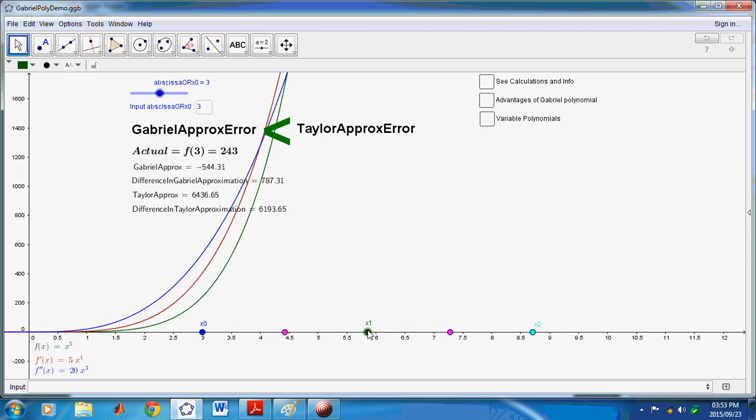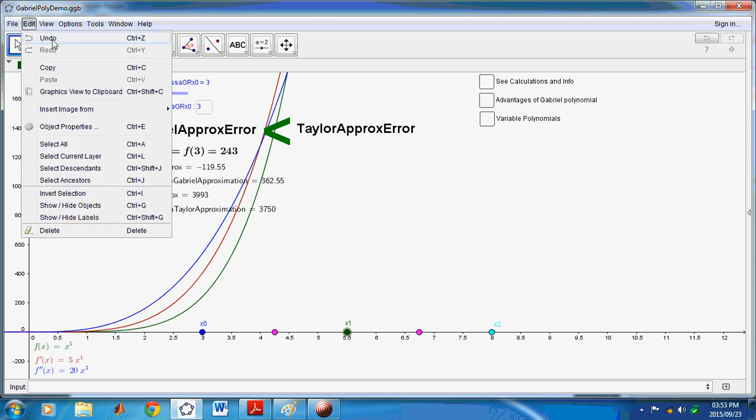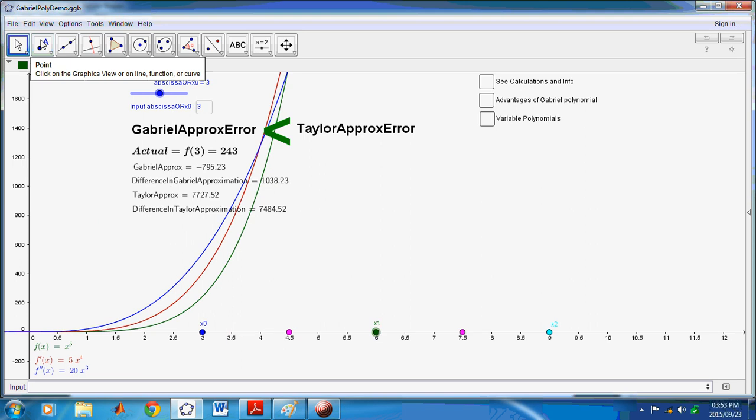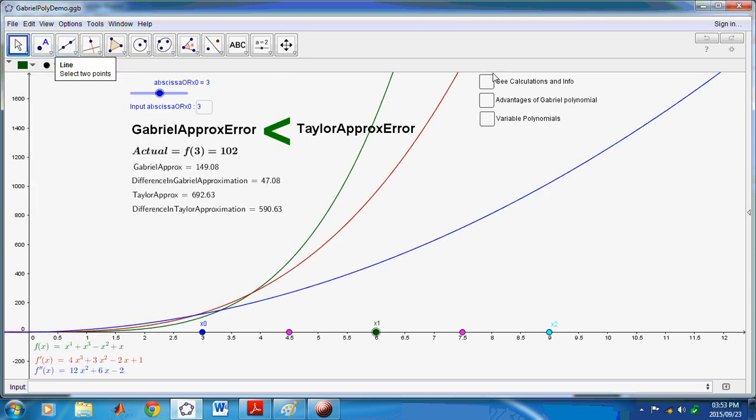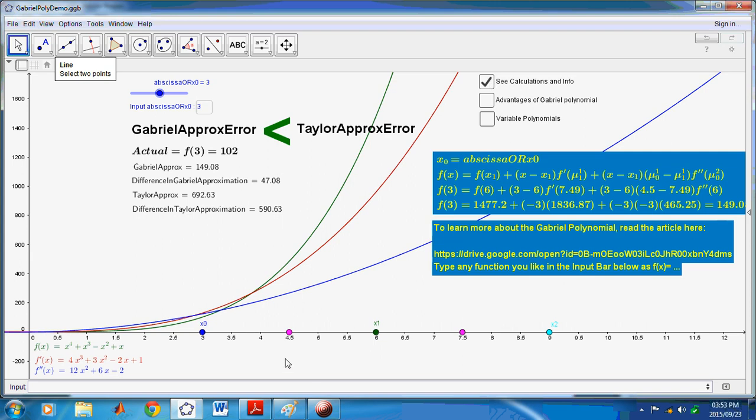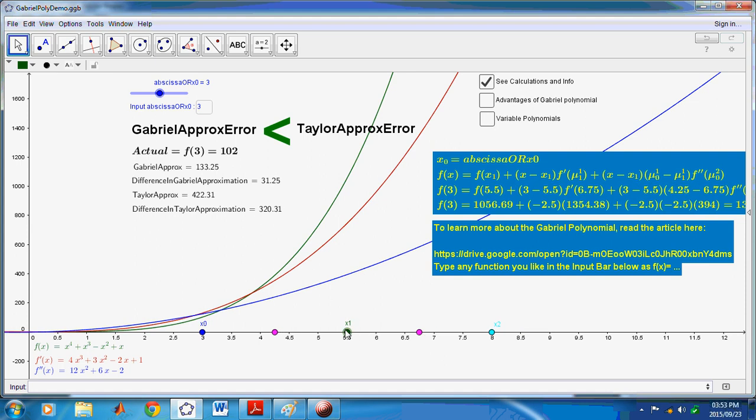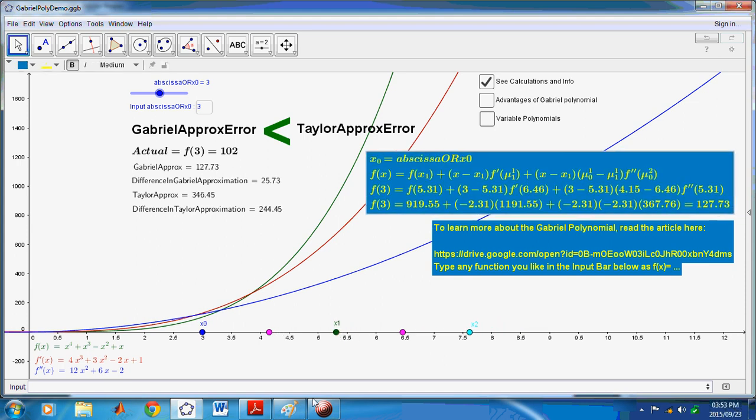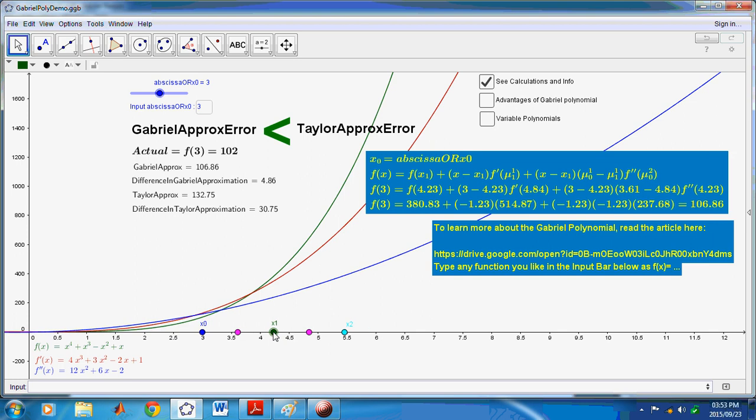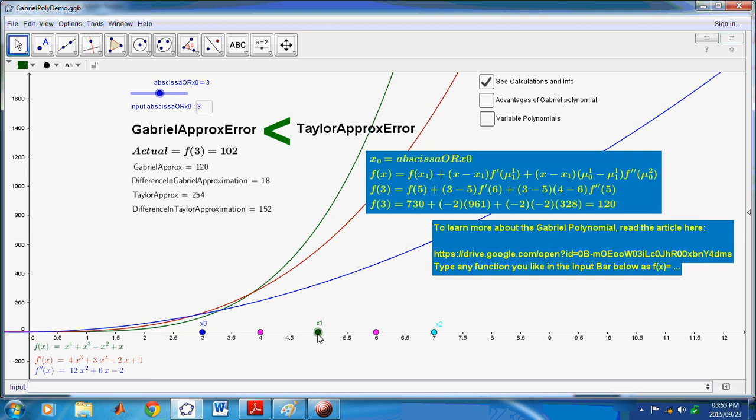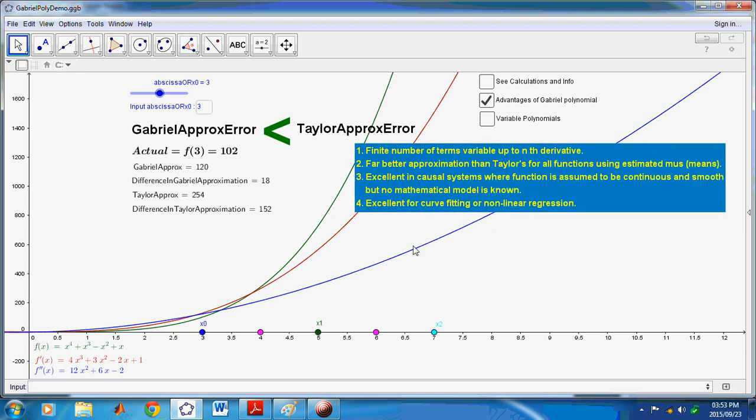So, the Taylor approximation is really very inferior to the Gabriel polynomial. Let's just undo that so we can go back to the previous one we had. And, now, we can actually watch the calculations taking place. So, in these boxes here, you can see what's happening, as you're calculating each of the values, both for the Gabriel polynomial and the Taylor approximation, or the Taylor series.